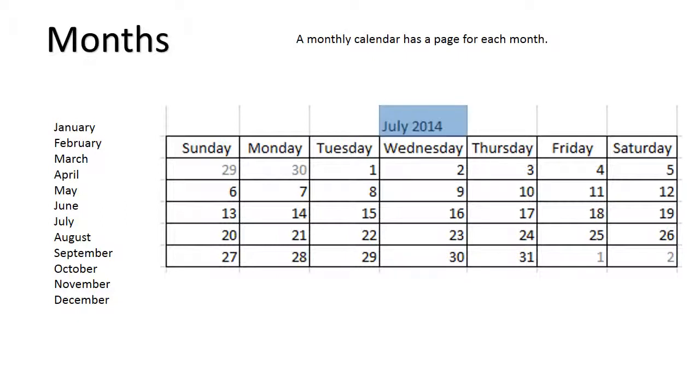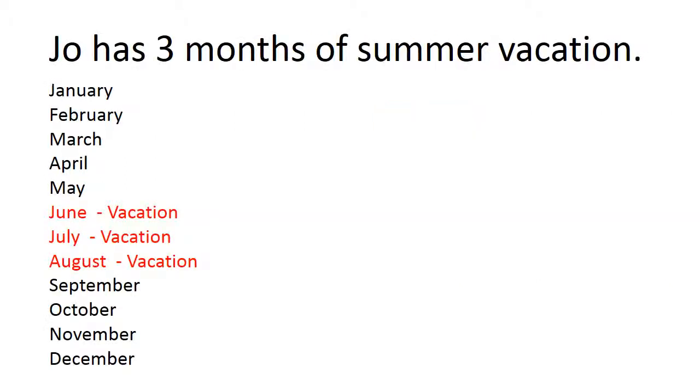The month shown here is July of the year 2014. Joe has three months of summer vacation in the hottest months: June, July, and August.